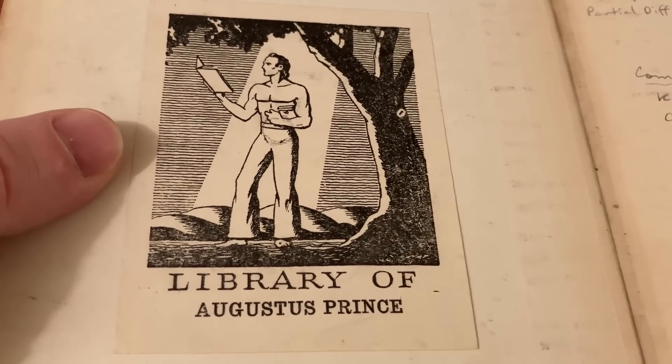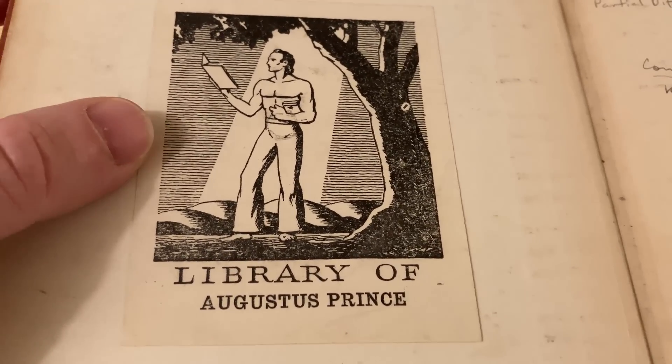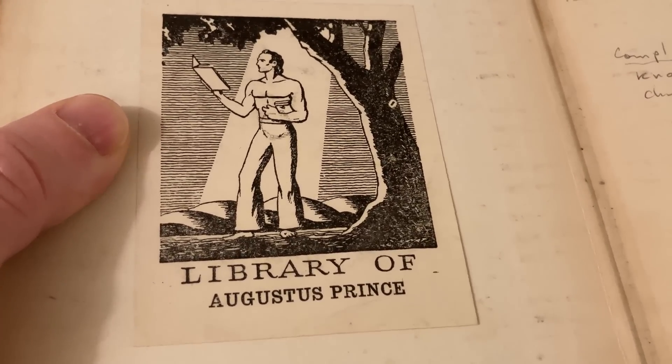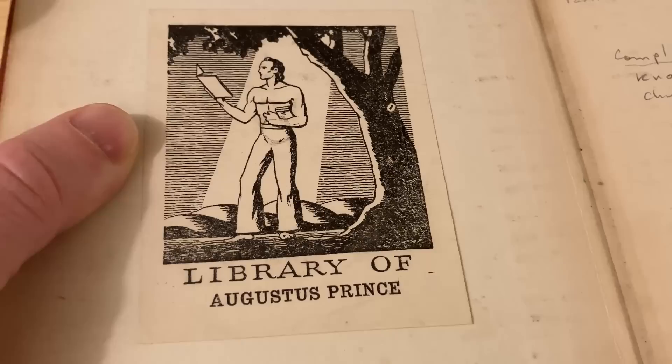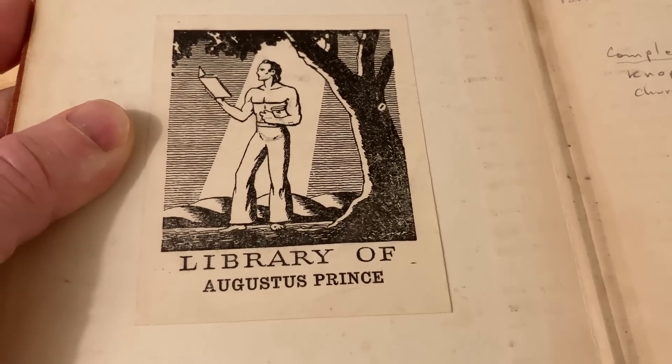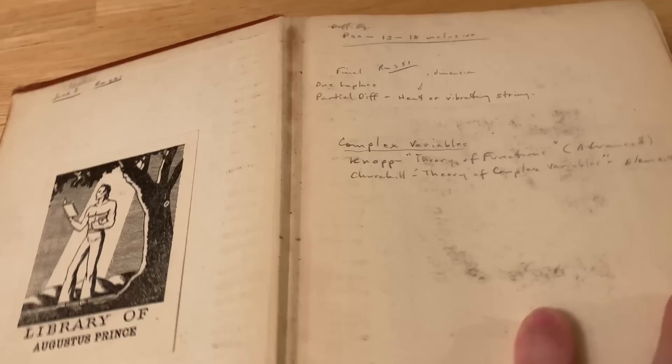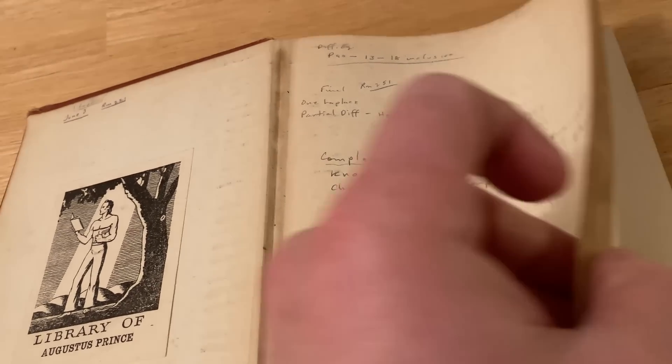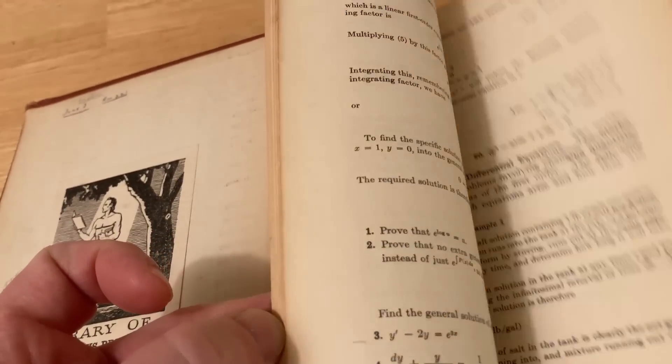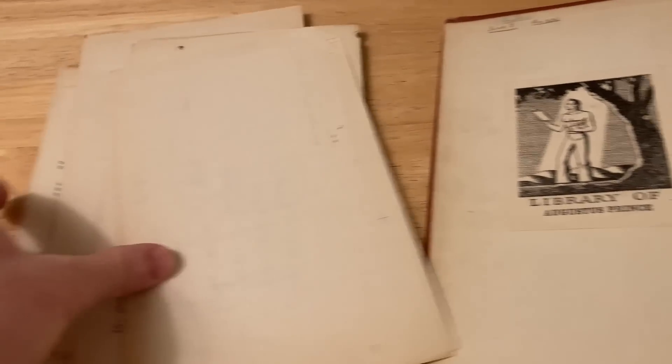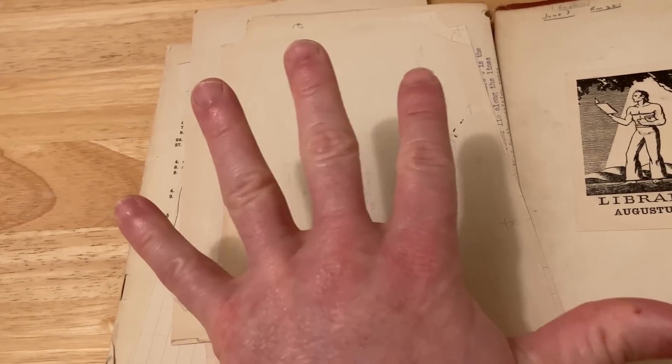So who is Augustus Prince? Augustus Prince was a famous nuclear physicist and he served in the U.S. Navy. He was actually the first black radar man in the U.S. Navy. This is one of his books and all of these papers came with the book.